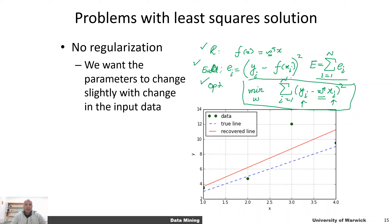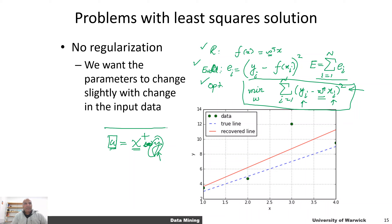Fortunately, if we take the derivative of this term — and I welcome you to try it out on your own — and set it equal to zero, we end up with a very simple expression: w is equal to the pseudo inverse of X, indicated by X-plus, times y. We know the data matrix X and vector y, and then we can recover w. This is essentially what we are doing in ordinary least square regression.